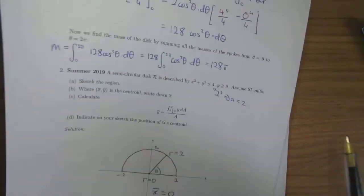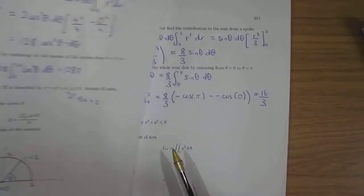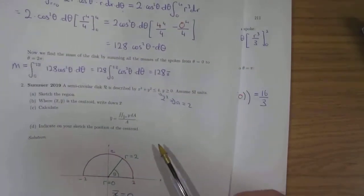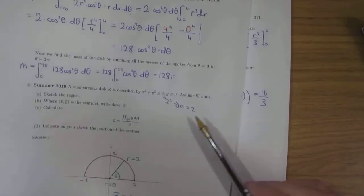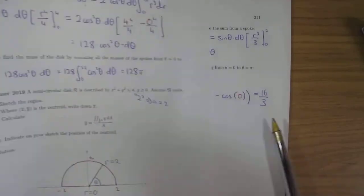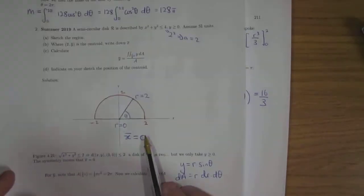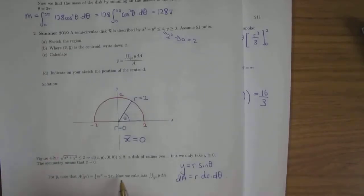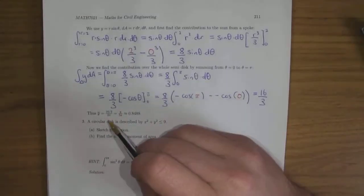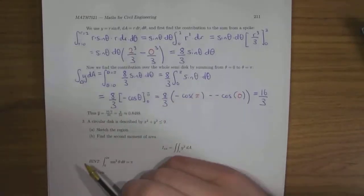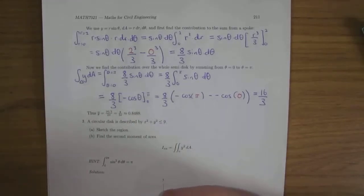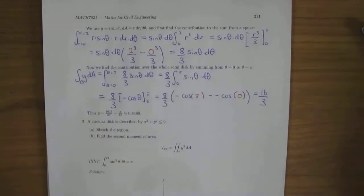Now divide the integral of y dA — which is 16 over 3 — by the area of the semicircle, which is half π r squared = 2π. So we have 16/3 divided by 2π. Going into the calculator, this is approximately 0.8488.